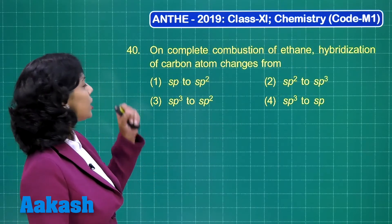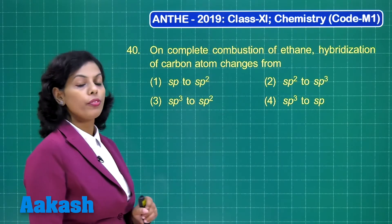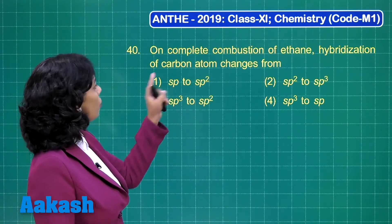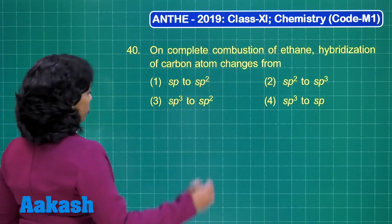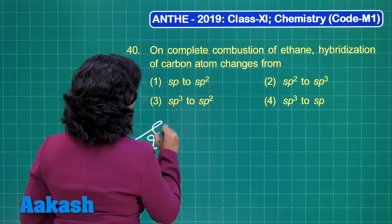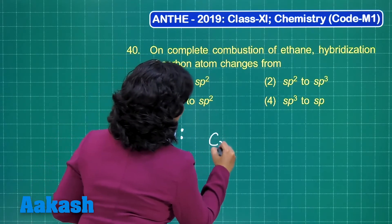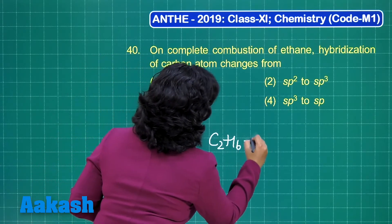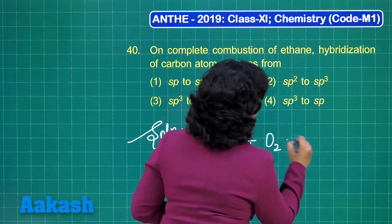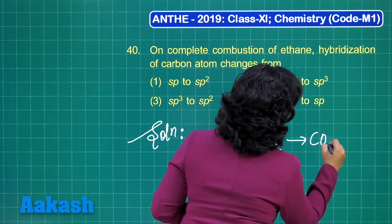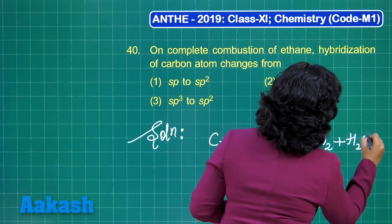Now the turn is for question number 40: on complete combustion of ethane, the hybridization of the carbon atom changes from — ? First of all you should know the process of complete combustion of ethane. Ethane is C₂H₆. On complete combustion with sufficient oxygen supply, the products are carbon dioxide and H₂O.